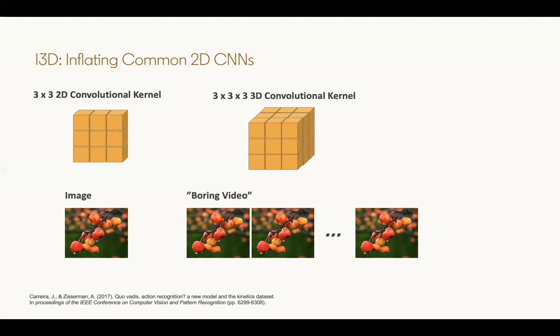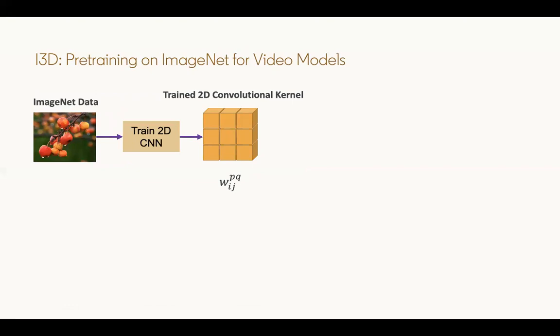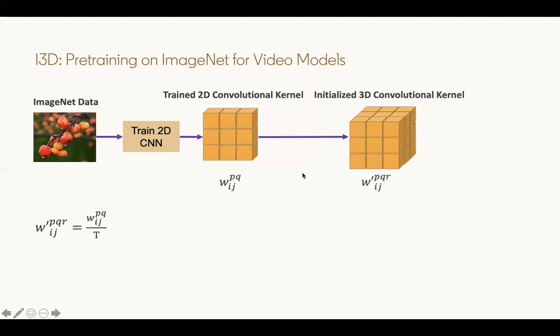We can actually expand this image to be a video by just replicating that image multiple times. One property we want to have is if you input the still image into a 2D CNN and have a certain output, we want to replicate that output by inputting this boring video into the 3D CNN. To do this, we need to first train a 2D CNN using ImageNet data or any sort of image dataset in the community. What this will do is train a set of 2D convolutional kernels. We can use these to initialize a 3D convolutional kernel by just taking the respective 2D counterpart and dividing by the temporal kernel width. In this case t as in the equation, but in this specific example, that would be 3.